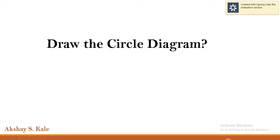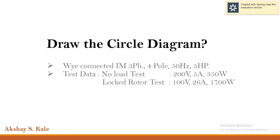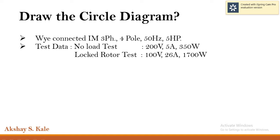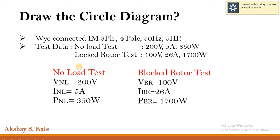For better understanding, we will take this example. We will draw the circle diagram for the star-connected induction motor having 4 poles and 5 HP power rating. We have the test data from the no-load test and the block rotor test. From this data, we can draw the circle diagram.